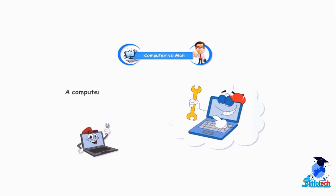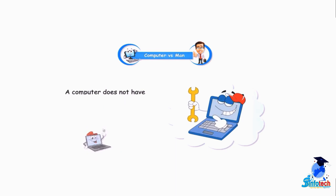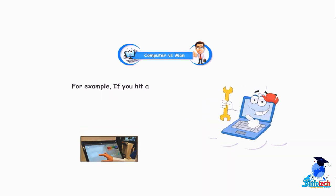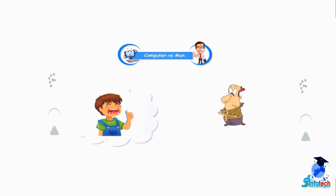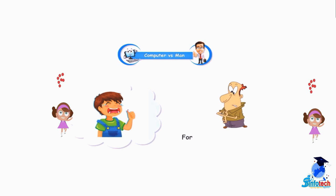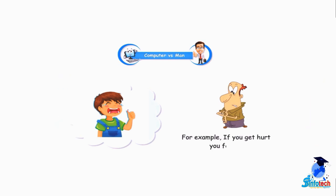A computer does not have any feelings. For example, if you hit a monitor, it does not react. A man has feelings. For example, if you get hurt, you feel it.